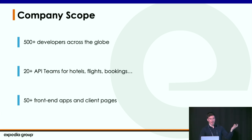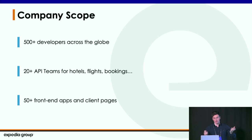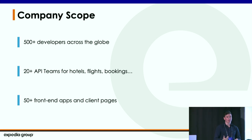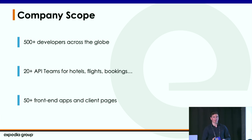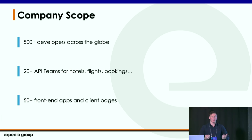We also have lots of API teams that power these different products — separate APIs for hotels, flights, booking, and customer data, each managed by an entire team. Then we have the front-end clients or apps consuming that data: over 50 different web pages plus iOS and Android mobile apps. We're onboarding new apps every day, and all these different apps have teams that manage them and consume this data.